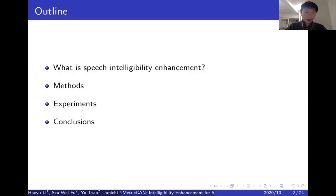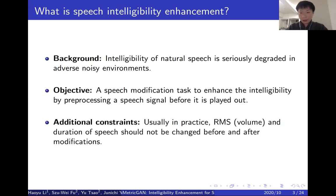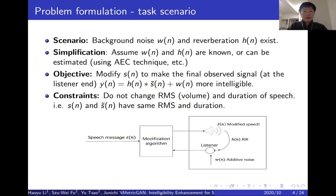This is the outline of this presentation. What is speech intelligibility enhancement? We all know the intelligibility of natural speech will be degraded in noisy environments. The objective of our work is to modify a speech signal to make it more intelligible when masked with surrounding noise. In addition, we keep the energy and duration of speech unchanged before and after modifications. More specifically, let's suppose a scenario where both noise W and reverberation H exist, as can be seen in this figure.